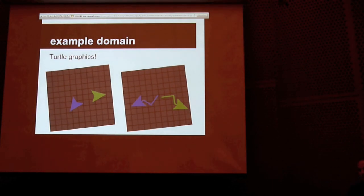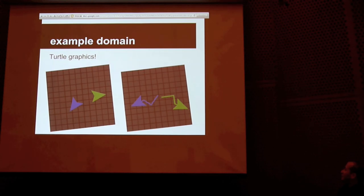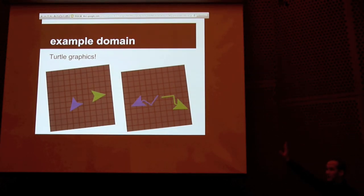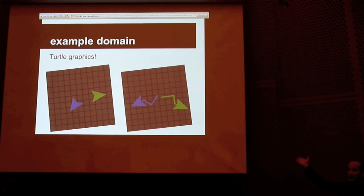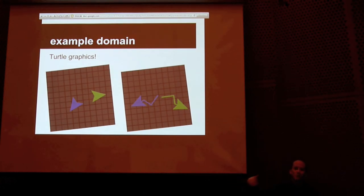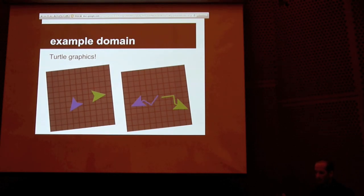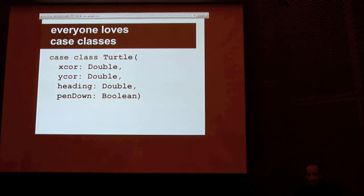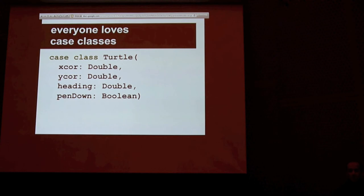The example code I'm going to show uses Turtle Graphics as the domain. Turtle Graphics is used for teaching programming — you've got turtles moving around on some kind of grid, so the turtle has an x-coordinate, a y-coordinate, and a heading. It's got a pen on it that needs to be up or down. If the turtle moves and the pen is down, then it draws a line behind. So, let's implement some turtles.